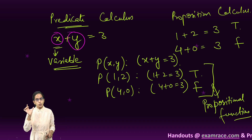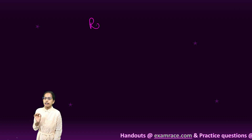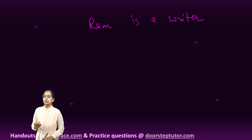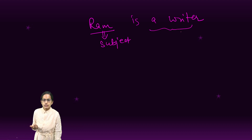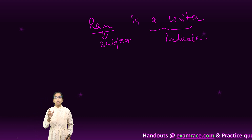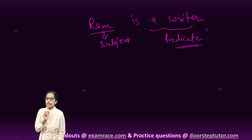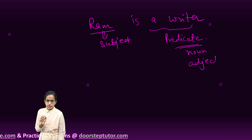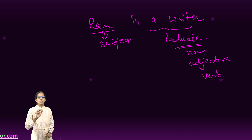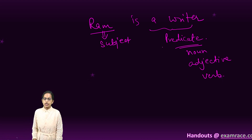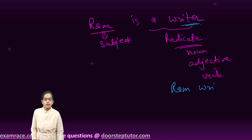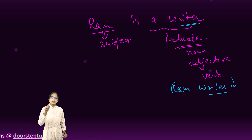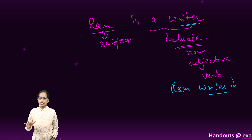Predicate calculus is where you use variables. In general English, for the statement 'Ram is a writer,' Ram is the subject and 'is a writer' is the predicate. However, in logic the concept is not that straightforward — a predicate can be a noun, adjective, or verb, as long as it says something about the subject. For example, 'Ram writes' is also a predicate in terms of logic.